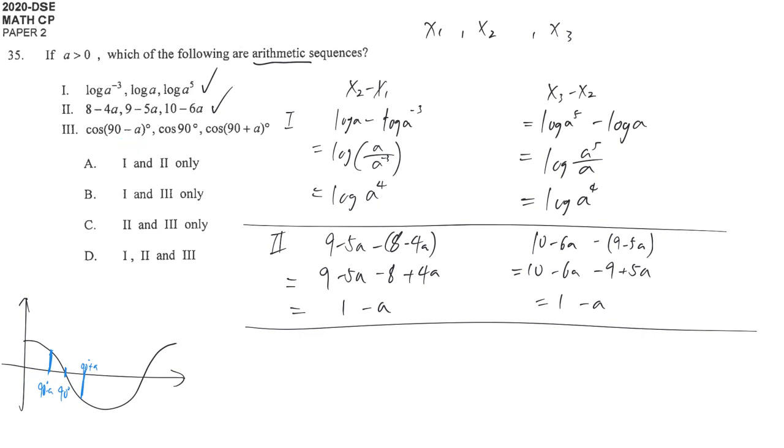Maybe you can say a is 10, so you're considering cos 80°, cos 90°, cos 100°. Even though it's not a perfect proof, if these two differences are the same, it supports this is an arithmetic sequence. Of course, you may take a = 20 to check more clearly, but in the traditional way,